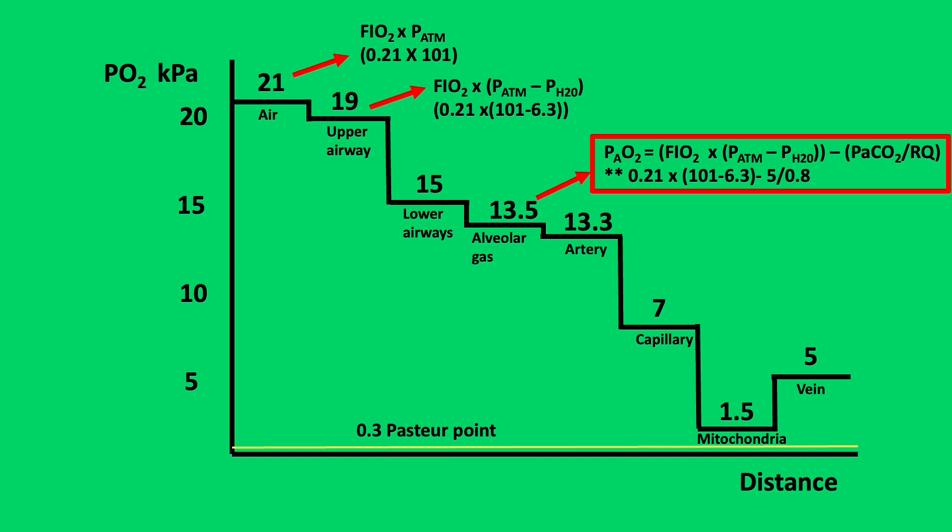The fourth step is a gradient between the alveolus and the arterial blood supply, known as the AA gradient. This is usually less than 2 kilopascals and is due to VQ mismatch and physiological shunt, leading to a reduction in PO2 to 13.3 kilopascals, so it goes from 13.5 to 13.3.